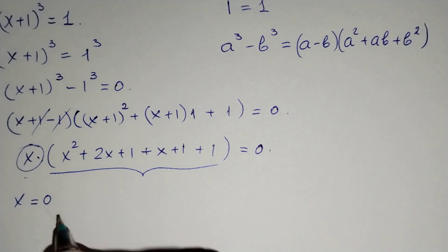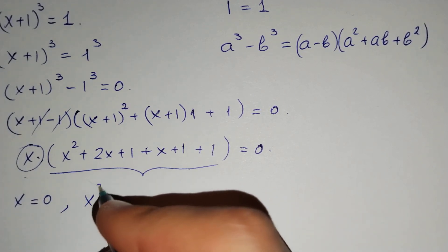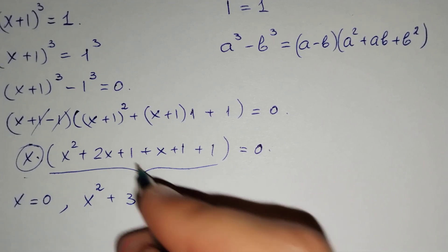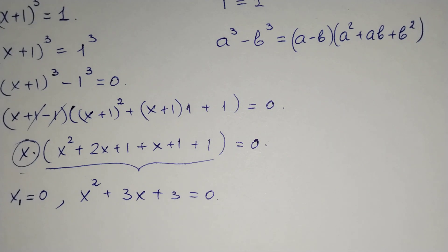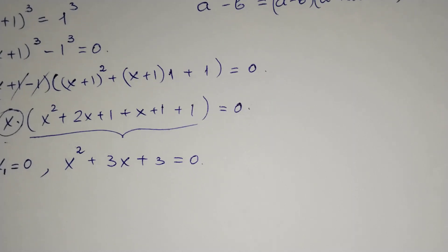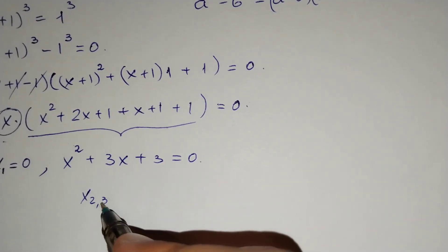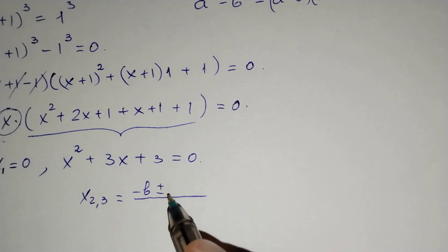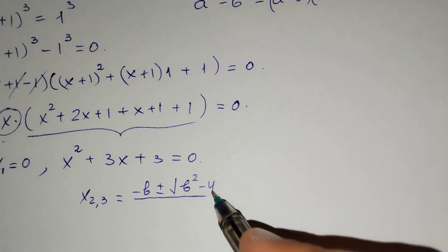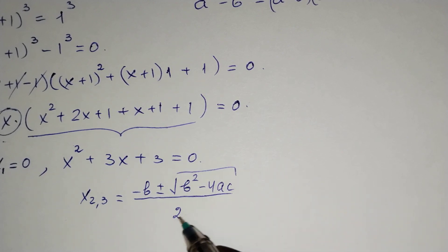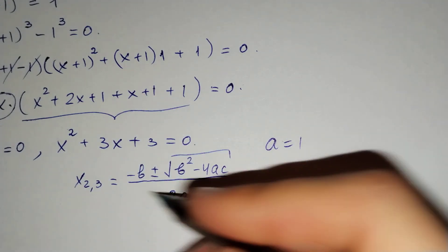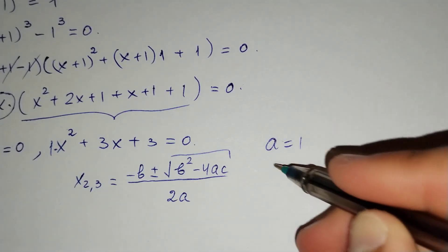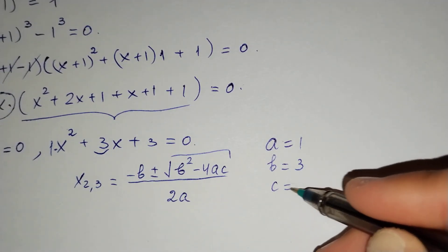So x₁ equals 0, and x² + 3x + 3 equals 0. This is a quadratic equation. Using the quadratic formula x equals minus b plus or minus square root of b² minus 4ac over 2a, here a equals 1, b equals 3, and c equals 3.